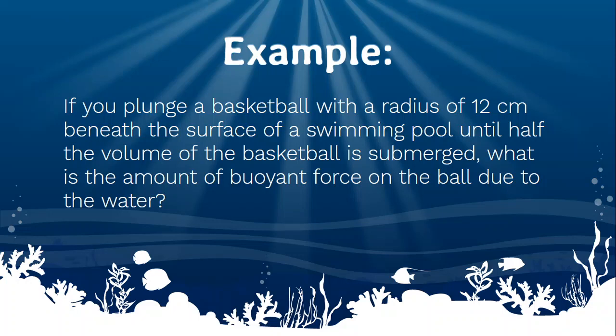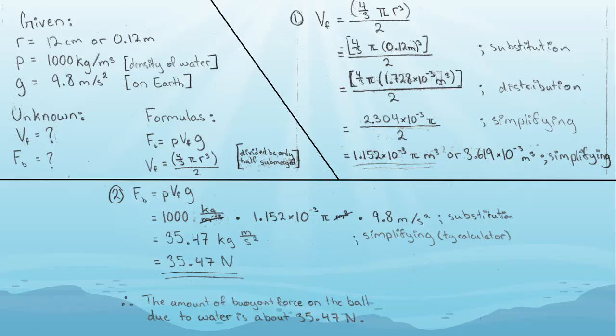Let's try an example. If you plunge a basketball with a radius of 12 centimeters beneath the surface of a swimming pool until half the volume of the basketball is submerged, what is the amount of buoyant force on the ball due to water? We're given the radius, which is 12 centimeters or 0.12 meters. We're given the density of water, which is 1,000 kilograms per meters cubed. And gravity, which is 9.8 meters per second squared on Earth.